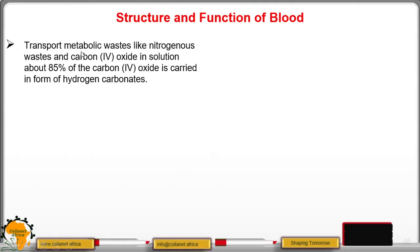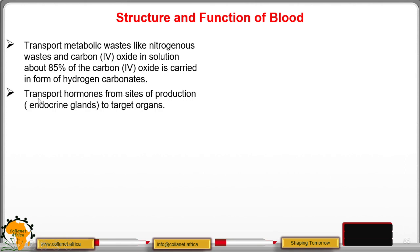Third, transport of metabolic wastes like nitrogenous wastes and carbon dioxide in solution — about 85 percent of the carbon dioxide is carried in the form of hydrogen carbonates. Plasma also transports hormones from the endocrine glands to the target organs, and regulates the pH of body fluids.